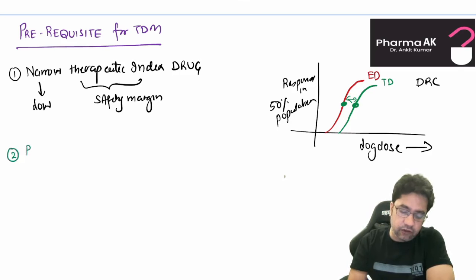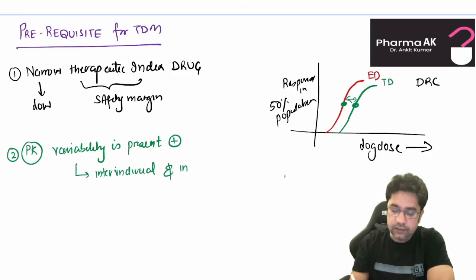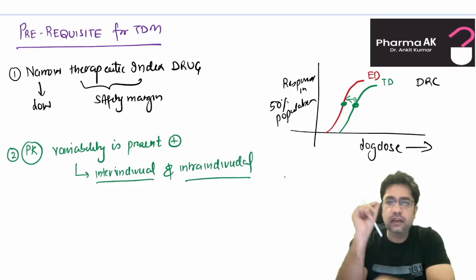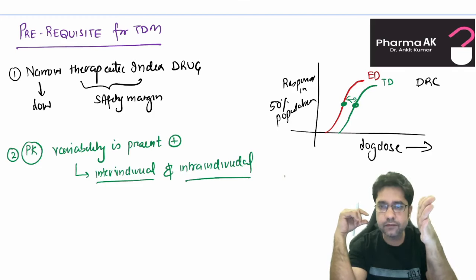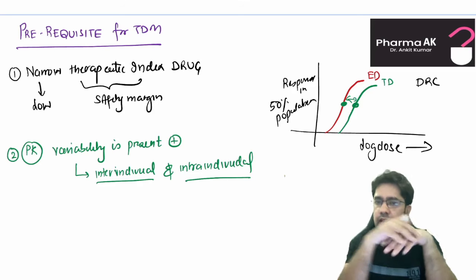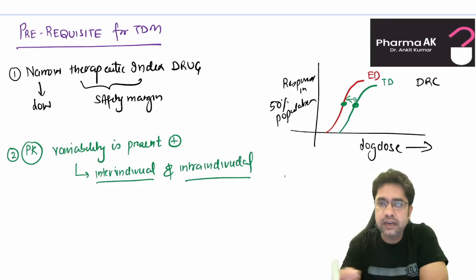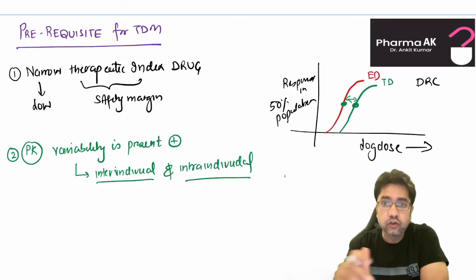The second prerequisite is that pharmacokinetic variability exists for the drug. This pharmacokinetic variability could be inter-individual — between two individuals. That means if I am giving, say, 10 milligrams of a dose to person A and person B, their plasma concentration will not be the same. This is known as inter-individual variability. Various factors cause inter-individual variability; one common cause is genetic variability. For example, the drug warfarin is metabolized by CYP2C9 enzyme. In some people, it is present in higher amounts; in some people, in lower amounts. So both individuals will not achieve the same plasma concentration.